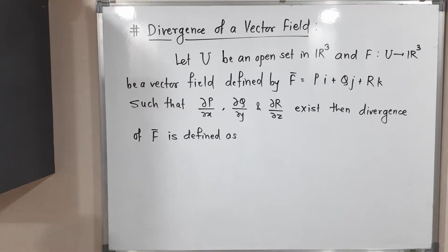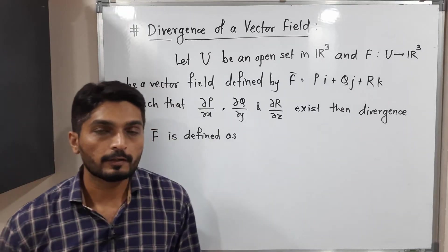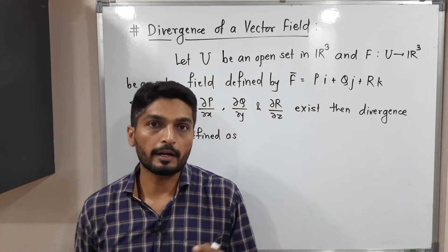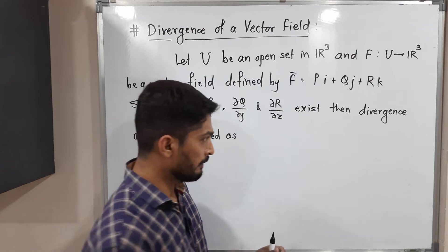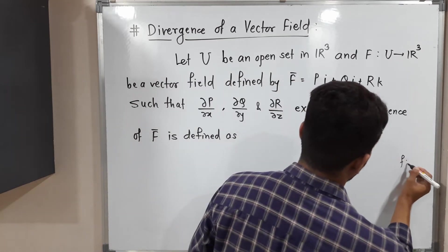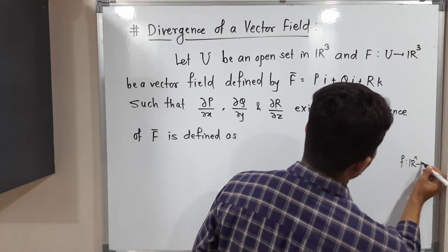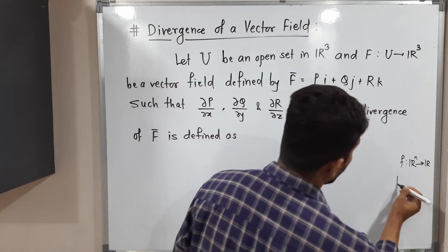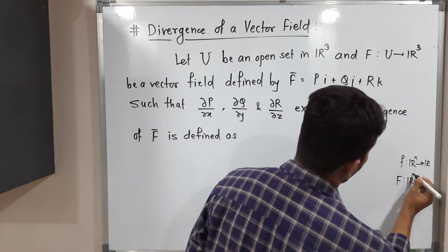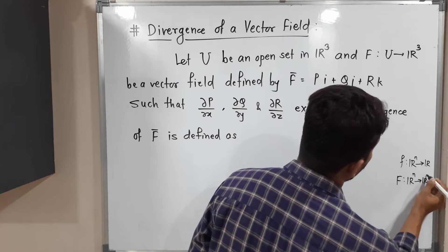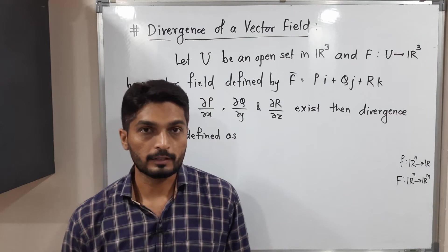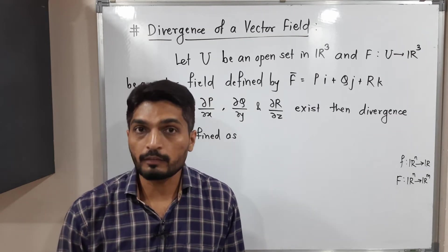Let us discuss the concept of divergence of a vector field. First, we will understand the difference between a scalar field and a vector field. If you have any function f from ℝⁿ to ℝ, we call it a scalar field. If you have a function F from ℝⁿ to ℝᵐ where m is greater than 1, we call it a vector field.